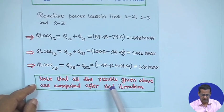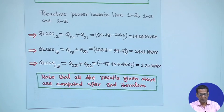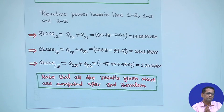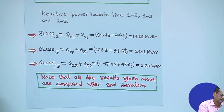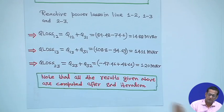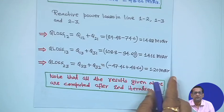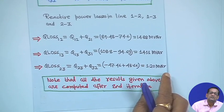Note that all results given above are computed after the second iteration only — it is not the converged result. For convergence, you have to perform more iterations and test convergence using the procedure described. This example considered all PQ type buses. Next, we will take an example that includes a PV bus and see how to accommodate it in the Gauss-Seidel method.